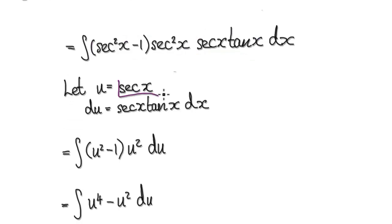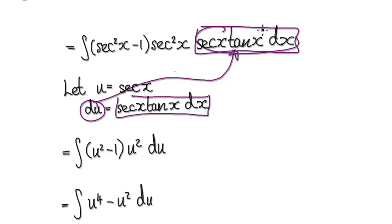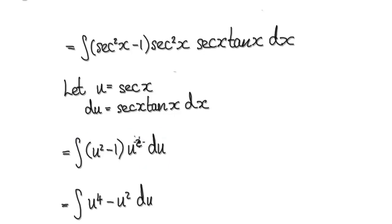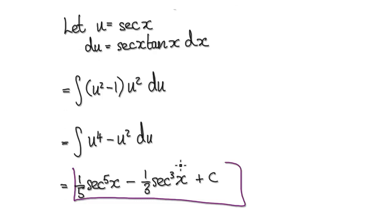So let u equal secant of x. If u equals secant of x, then du equals this whole thing here, so this whole thing here is exactly the same as this. We can substitute into the integral — secant squared becomes u squared. So it's a matter of integrating this, which is easy. This times this gives us this, this times this gives us this, integrate it, and your final answer would be this.